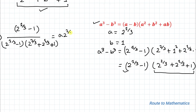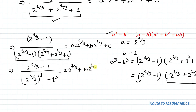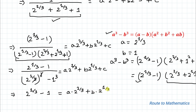The right hand side remains a multiplied with 2 to the power 2 by 3 plus b multiplied with 2 to the power 1 by 3 plus c. The denominator product is nothing but a cubed minus b cubed, which equals 2 minus 1. The 1 by 3 power and the cube cancel out, so in the denominator we have 2 minus 1 which equals 1. Therefore (2 to the power 1 by 3 minus 1) remains, giving us a multiplied with 2 to the power 2 by 3 plus b multiplied with 2 to the power 1 by 3 plus c.